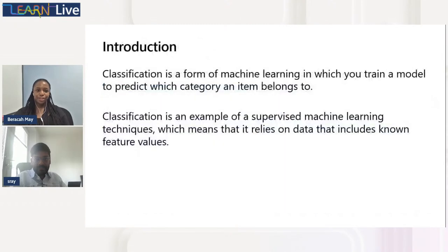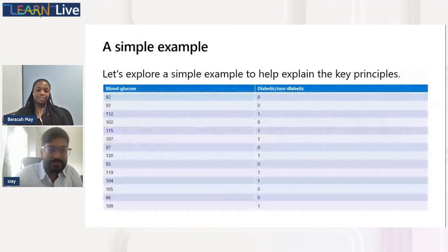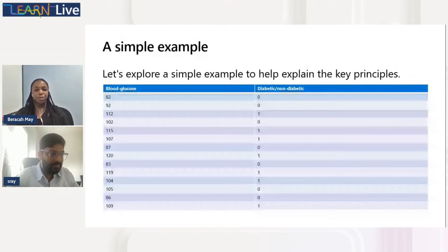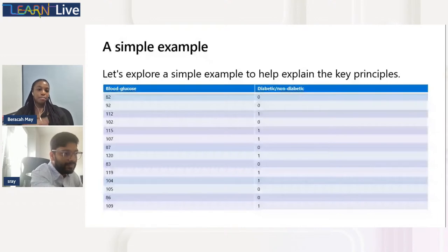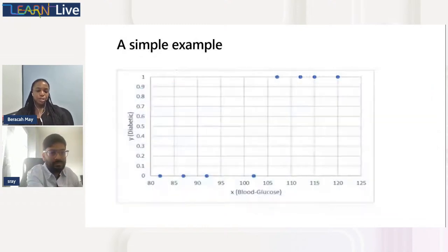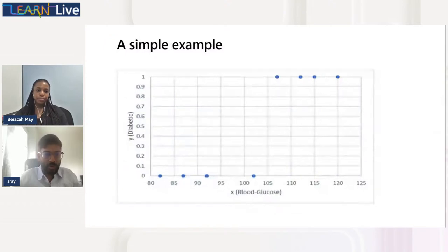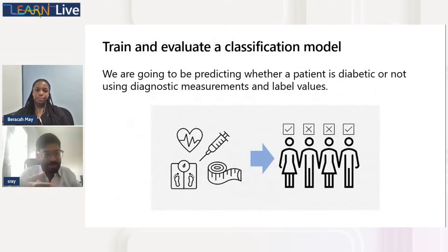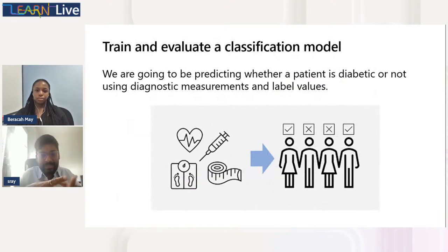Here's a simple example: we're trying to use blood glucose to classify whether someone is diabetic or non-diabetic — categorizing data based on features we already have. We'll look at what level of blood glucose classifies a person as diabetic or not. In this session, we will train and evaluate a classification model to predict whether a person is diabetic or not.